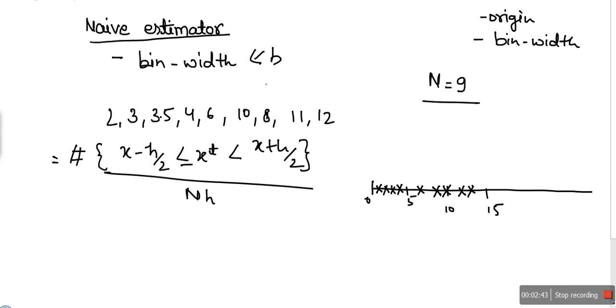X is the point where we want to compute the probability. Let's take 4. We want to see what is the probability at 4. And bin width we are considering, let's say, 6.